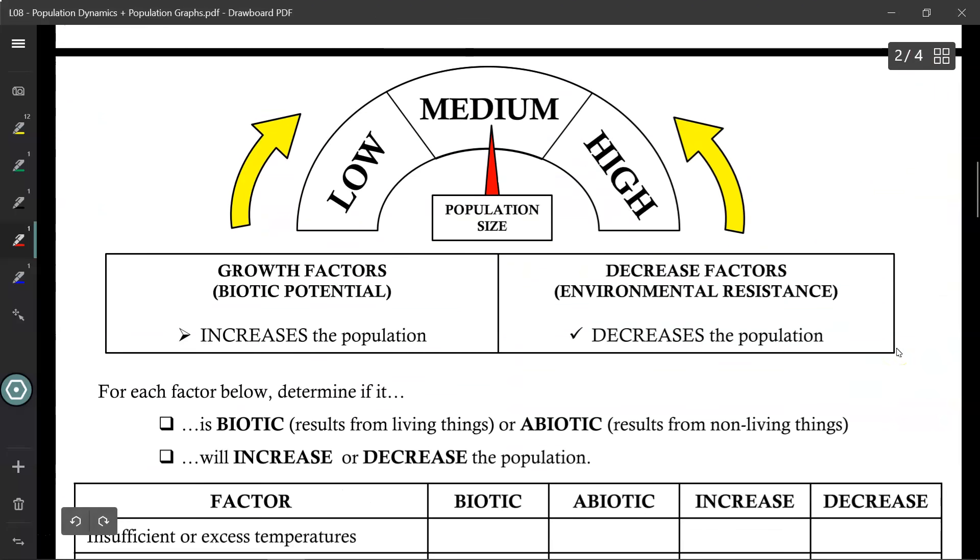Alright, moving ahead. So any factor that can improve or increase your population is called a growth factor, or the fancy word for that is biotic potential. Meanwhile, any factor that will decrease your population is known as a decrease factor or an environmental resistance.